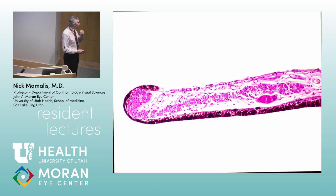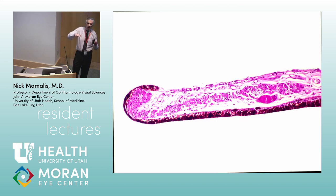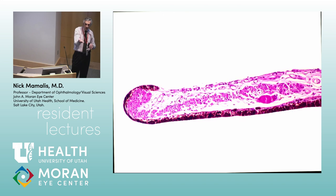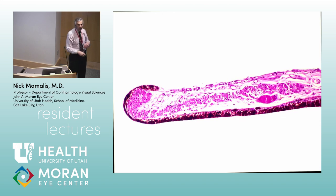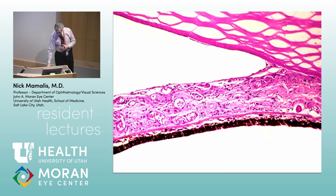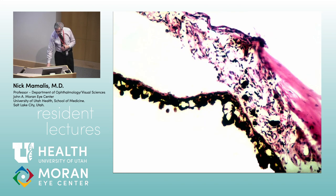As discussed before regarding glaucoma: the abnormal blood vessels on the iris surface contract, pulling that pigment epithelium from the posterior surface around the pupil edge — this is called ectropion uveae, where you see a dark area around the edge of the pupil. Those vessels can then grow into the angle, causing secondary angle closure — here you can see the iris plastered against the peripheral cornea, closing off the angle.